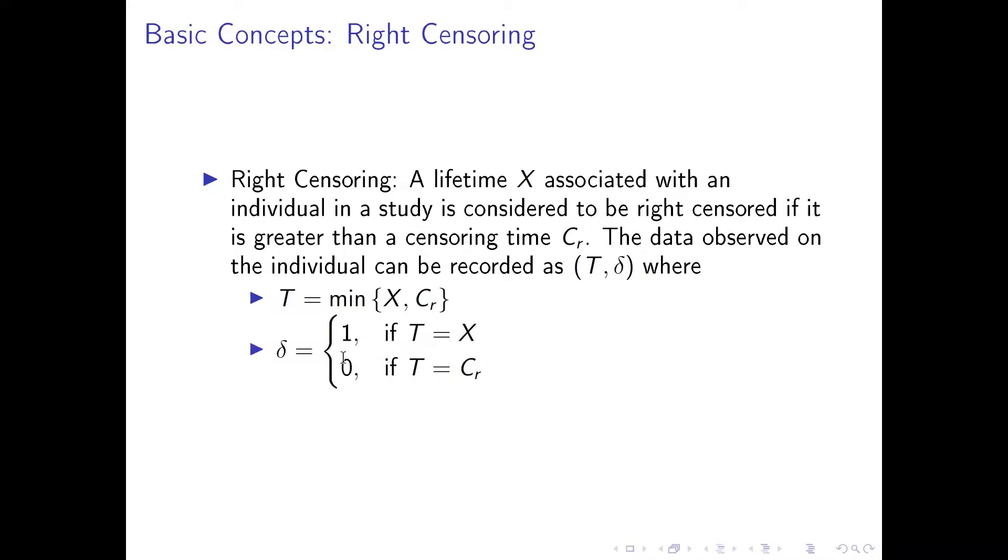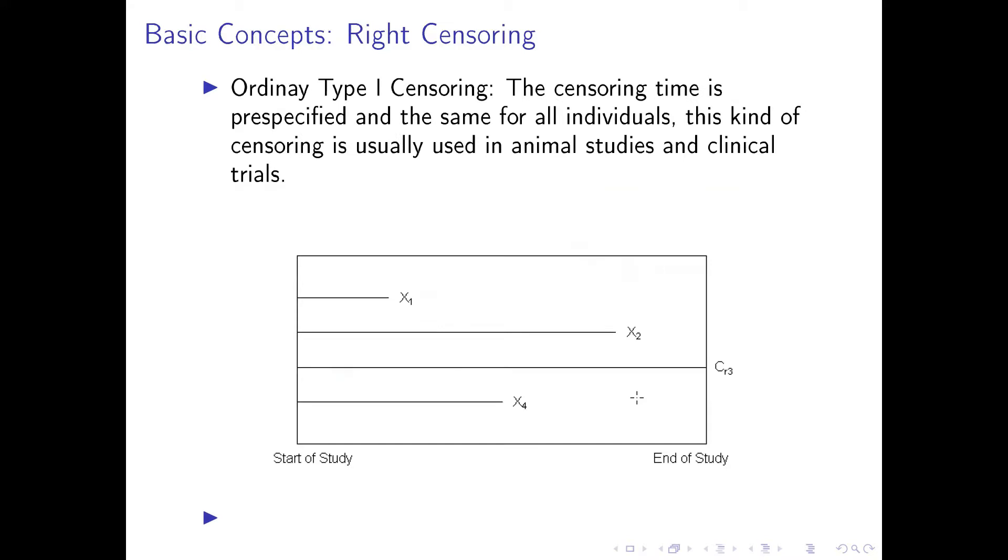And the Delta is equal to one if T, the time variable, is equal to the time to event or lifetime X. And if it is zero, then T is equal to the censoring time. So Delta here is called the censoring status variable. And in this case, when it is one, then we do observe the time to event. And when Delta is zero, then it is censored.